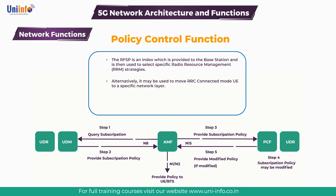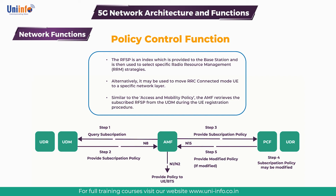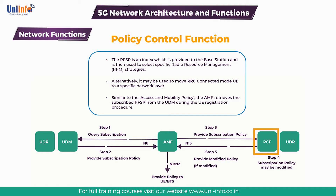Alternatively, it may be used to move an RRC connected mode UE to a specific network layer. Similarly to the access and mobility policy, the AMF retrieves a subscribed RFSP from the UDM during the UE registration procedure. It is subsequently provided to the PCF where it can be modified according to an operator policy. The PCF is equivalent to the subscriber policy identity used by 4G networks.